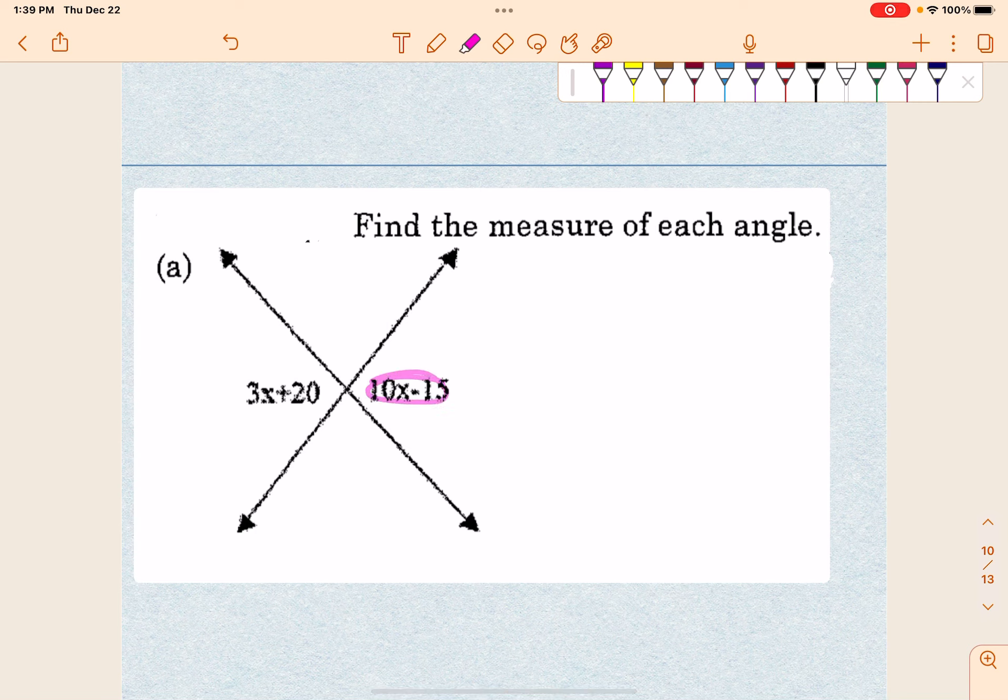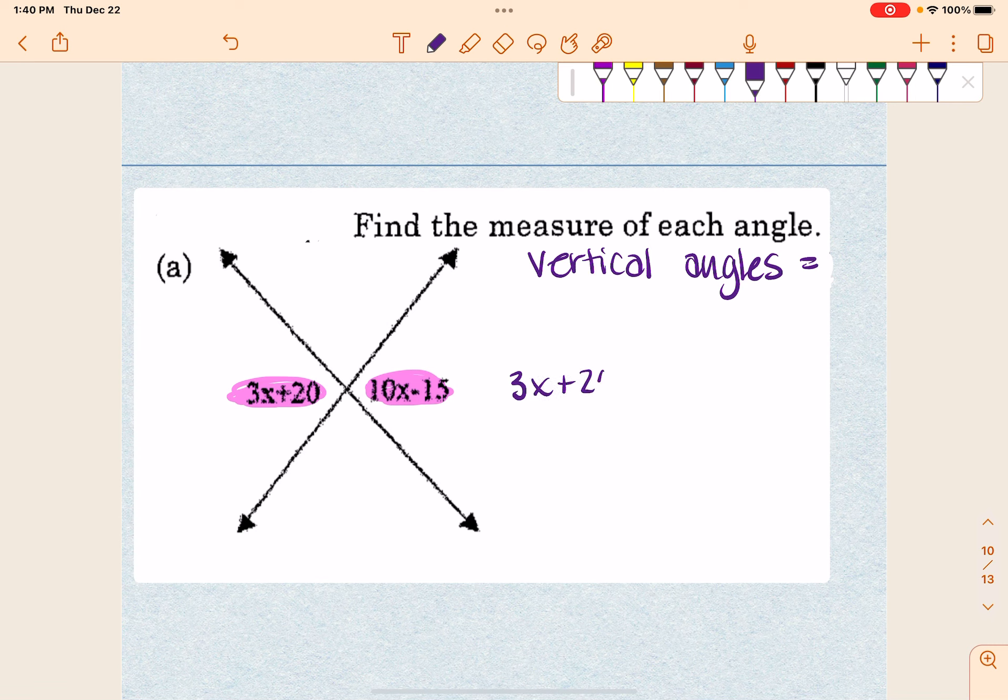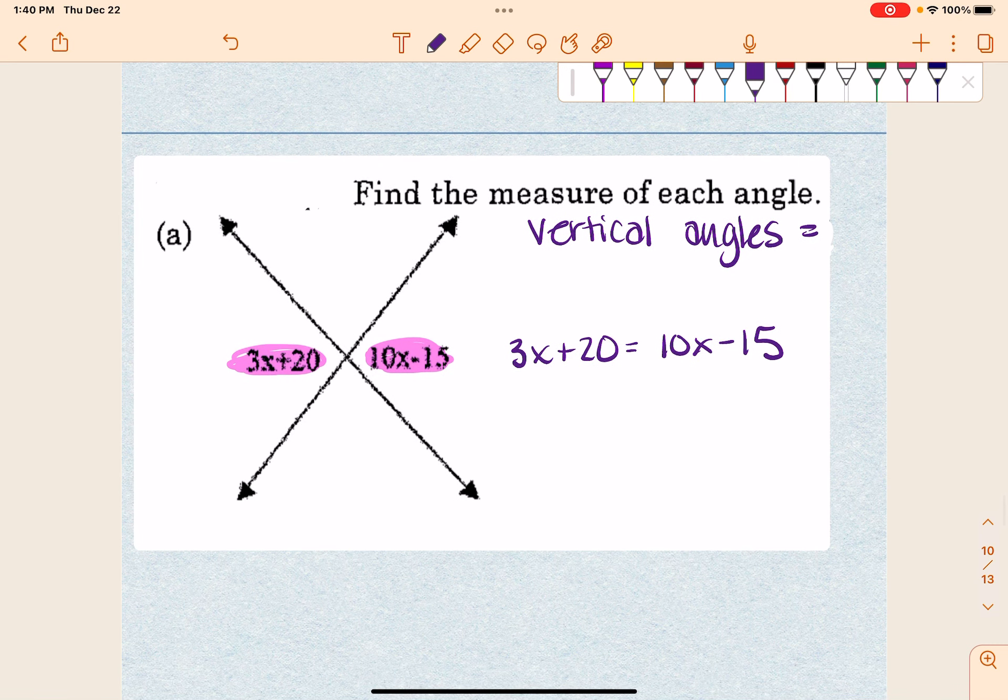So if I'm looking at it, this right here and this right here are going to have to be equal because they are vertical angles. So if they're vertical angles, then you know that they're equal. So that means that 3x plus 20 is going to have to equal 10x minus 15. Now they want us to find the measure of each angle. So our number one thing first is to actually go through and find the x.